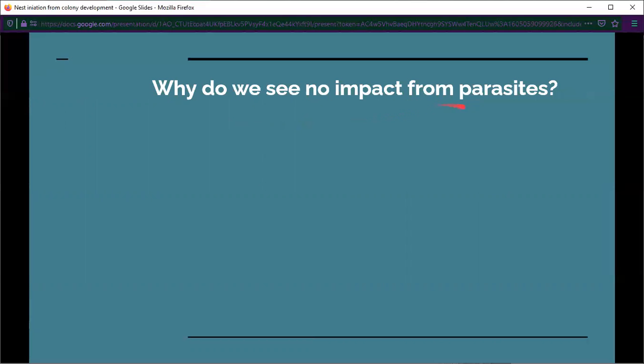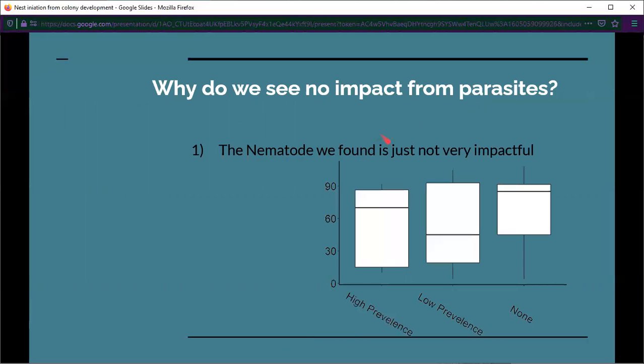The next question is why do we see no impact in nest initiation from parasites? I think it's just because the nematode we found is not very impactful. This graph shows high prevalence, low prevalence, and no nematodes, and the y-axis is the days that they survive in captivity. You would expect that if the nematodes were impactful, you'd expect the queens infected with them to die quicker, and you don't see that. I think the nematodes are just not very impactful on these bumblebees.